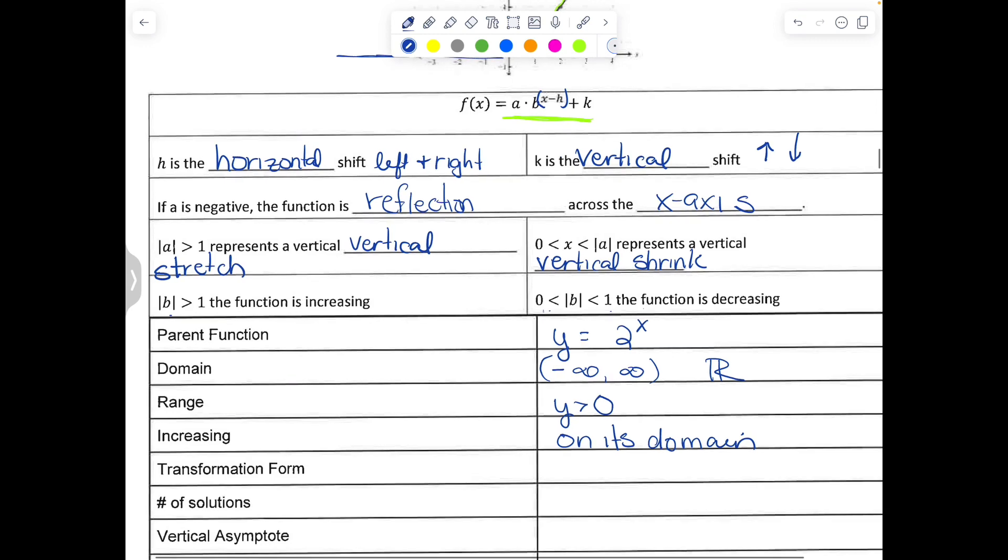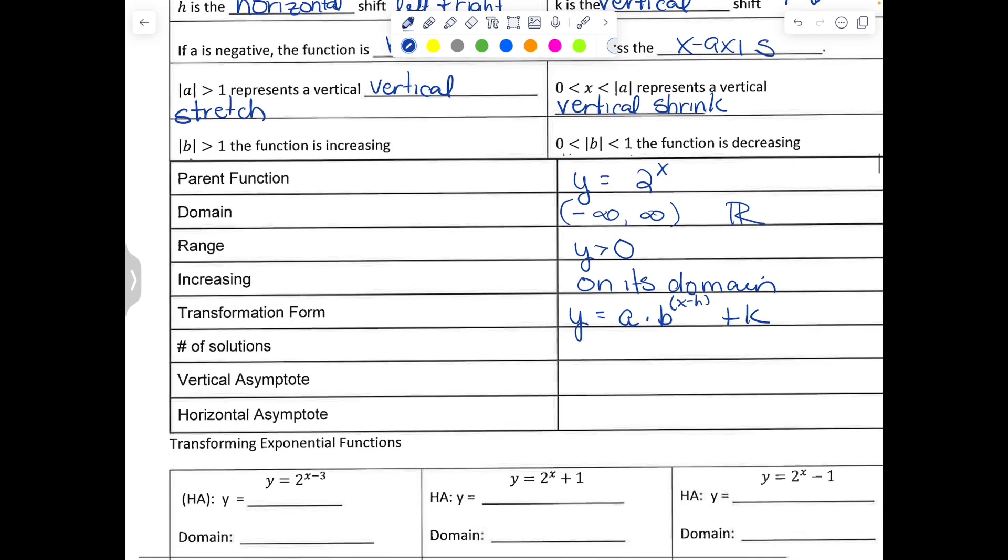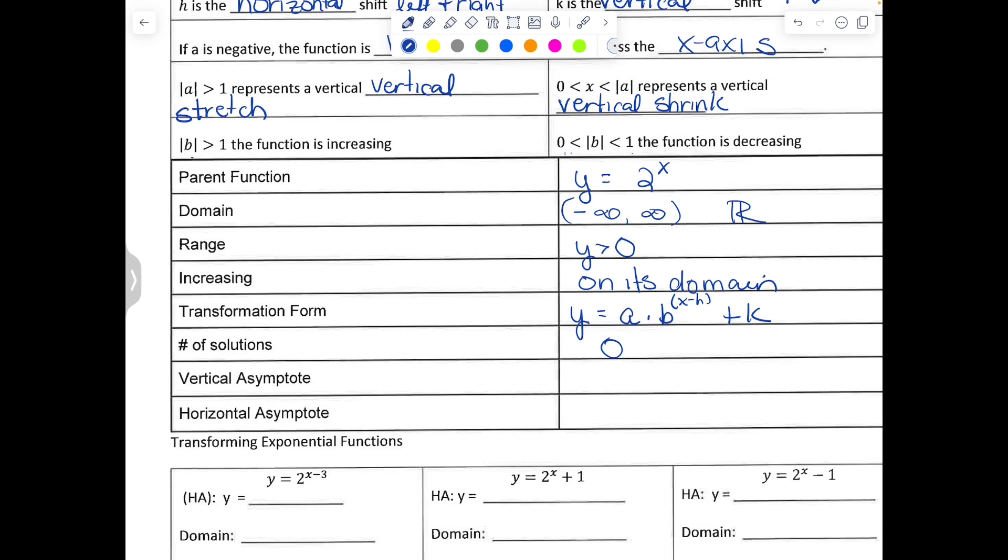The transformation function is what I've showed you above, so that transformation function is y equals a times b to the parenthesis x minus h close parenthesis plus k. And it has zero solutions since it never crosses the y-axis, and that is the parent function.